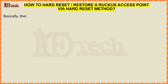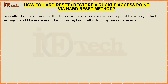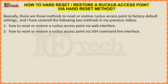Basically, there are three methods to reset or restore a Ruckus access point to its factory default settings, and I have covered the following two methods in my previous videos: Number 1 - How to Reset or Restore a Ruckus Access Point via Web Interface. Number 2 - How to Reset or Restore a Ruckus Access Point via SSH Command Line Interface.